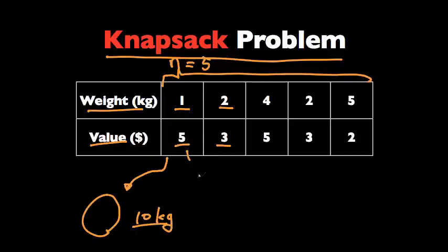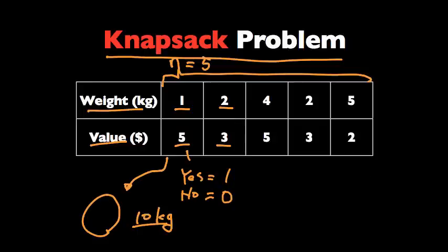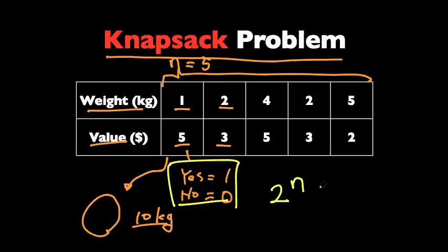For each item we're going to decide: do we put it in the knapsack or not? We can write it as 1 if it's in the knapsack, or 0 if it's not. At first glance it looks very hard, because if we make this decision for every item, the total number of potential solutions is going to be 2 to the power of N, or 2 to the power of 5 in this case. But actually we can do much better than that with dynamic programming.